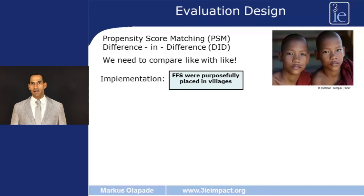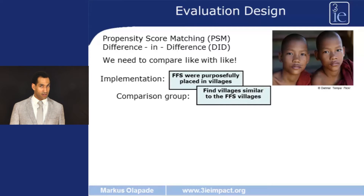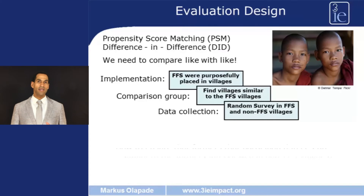The FAO didn't implement this project in a randomized way, and it is for this reason that Davis and co-authors had to come up with a non-experimental way of identifying the impact. The FAO particularly selected villages that were most needful in terms of agricultural knowledge and access to agricultural inputs. So the study authors had to find comparison villages that are similar in terms of topography, rainfall pattern and most importantly access to agricultural knowledge. Once they had identified this group of villages, they conducted a random survey in the treatment and comparison villages.